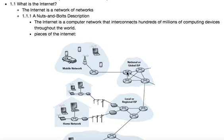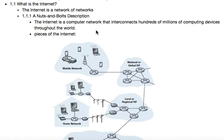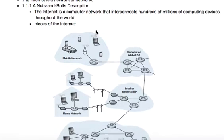So what is the internet? The internet is a network of networks. There are a couple of ways to describe it. We'll start with a nuts and bolts description. The internet is a computer network interconnecting hundreds of millions of devices throughout the world.